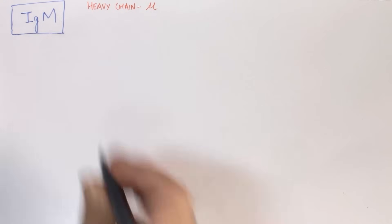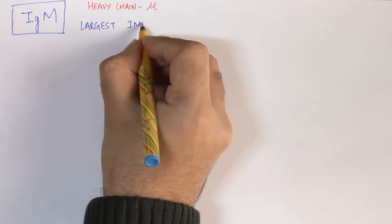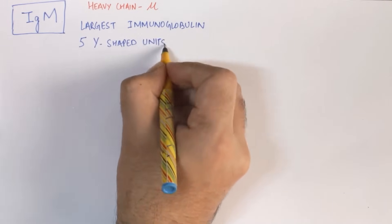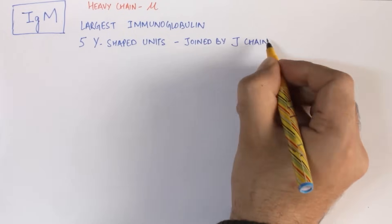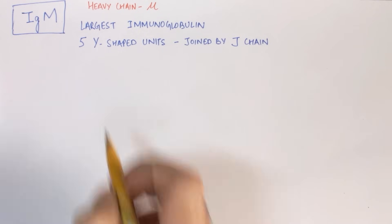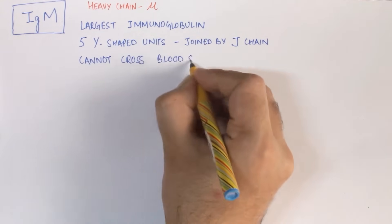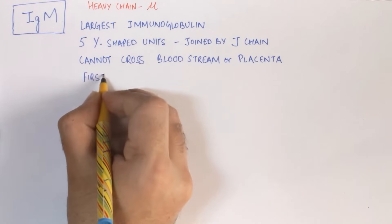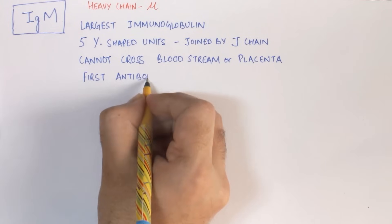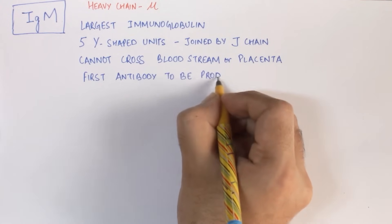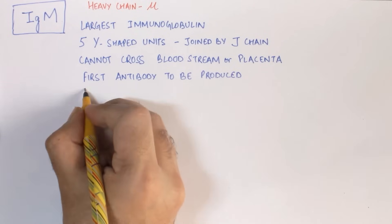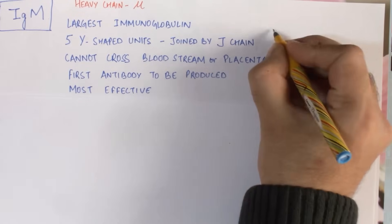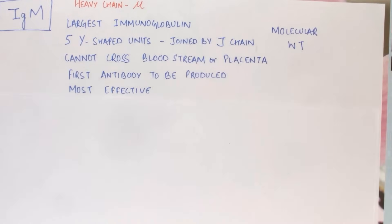The heavy chain present in IgM is of the mu type. IgM is the largest immunoglobulin in humans — it consists of five Y-shaped units joined together by a J-chain. IgM is a very large antibody and cannot cross the bloodstream or the placenta. It is the first antibody produced in response to any foreign antigen invasion, and it is also the most efficient type of antibody against antigens. The molecular weight of IgM is 900,000.